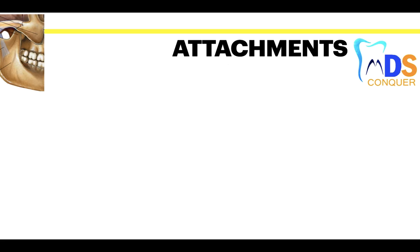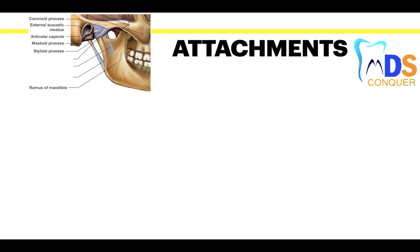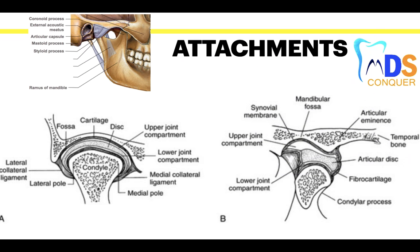What are the three main ligaments of the TMJ? The collateral ligaments, capsular ligaments, and the temporomandibular ligaments. The sagittal section shows the condyle inferiorly and the articular disc between the mandibular fossa and the condyle, with a synovial membrane lining the interior cavity. The coronal section shows the lateral and medial collateral ligaments near the medial and lateral poles of the condyle.